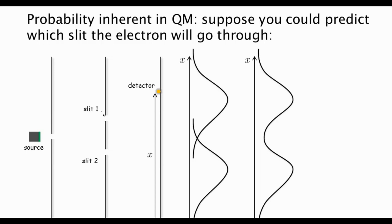Maybe the fact that we are saying it went through either slit one or slit two is just a consequence of our lack of knowledge about the initial conditions. And maybe if we knew enough about the initial conditions of the electron, we could predict which slit it went through.